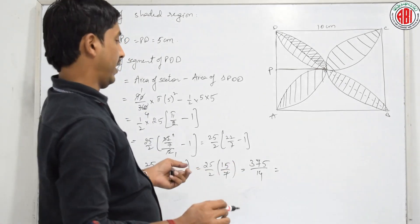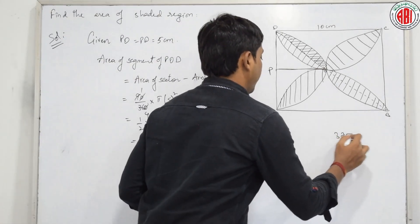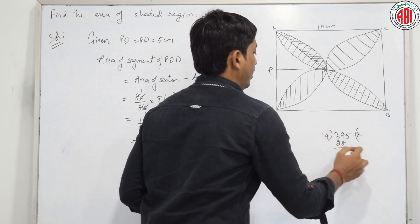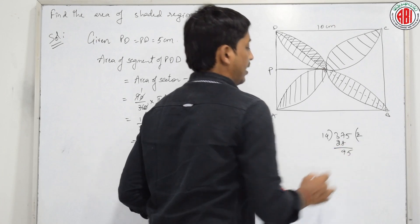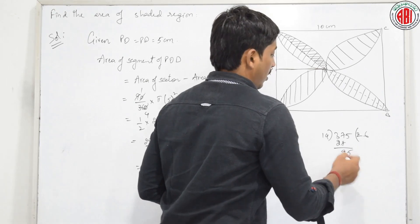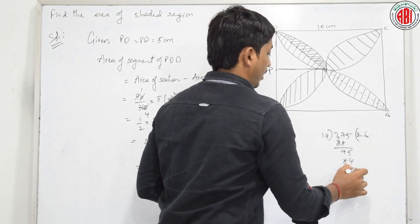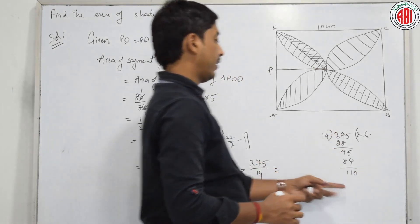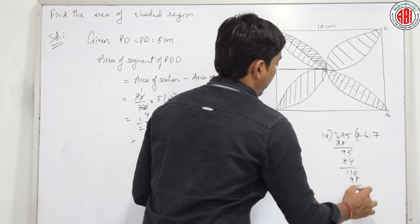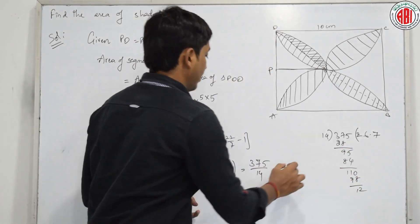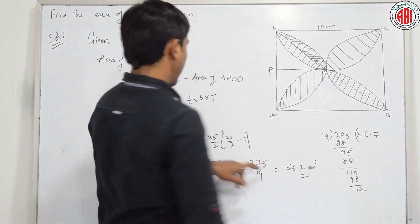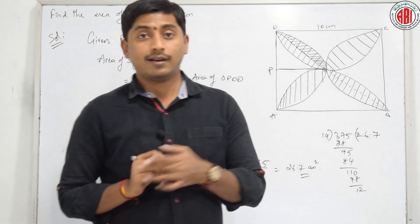375 divided by 14 gives approximately 26.7. The answer is 26.7 centimetre square. Isn't it easy to solve? Shall we move on to the next problem?